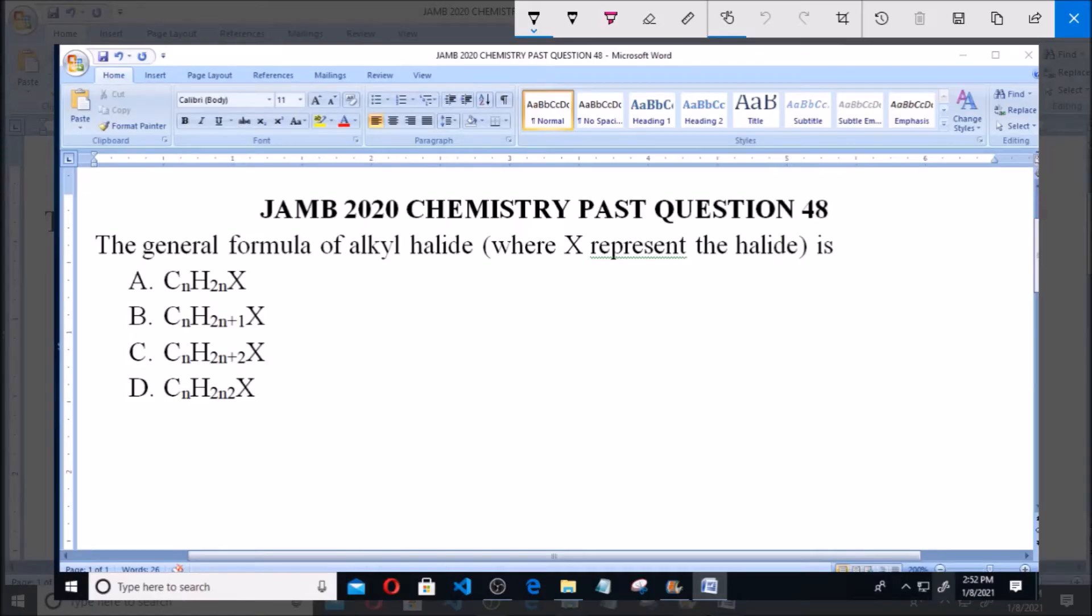Good day and welcome. I will be answering JAMB 2020 Chemistry past question 48. The general formula of alkyl halide where X represents the halide is: A. CnH2nX, B. CnH2n+1X, C. CnH2n+2X.